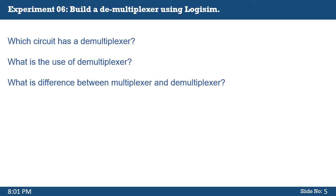Some questions arise regarding the demultiplexer. An important note is to always change the selection inputs S1 and S2, then change the input and observe that it is routed to the selected output Y0 to Y3. Larger demultiplexers can be constructed by cascading smaller demultiplexers together.